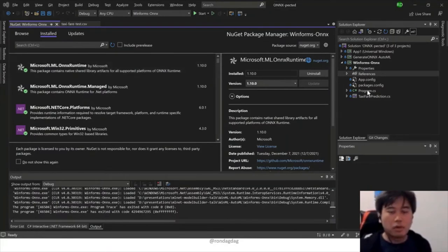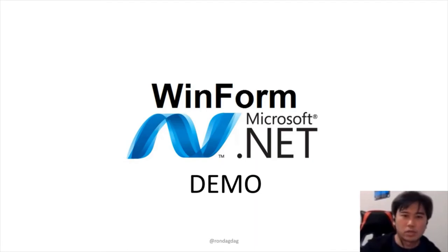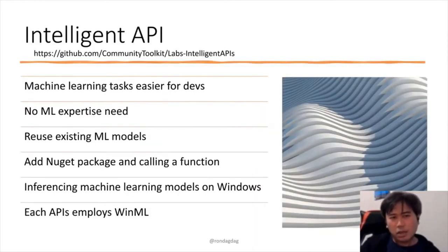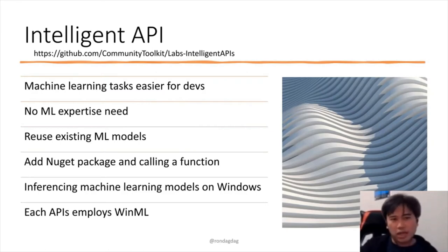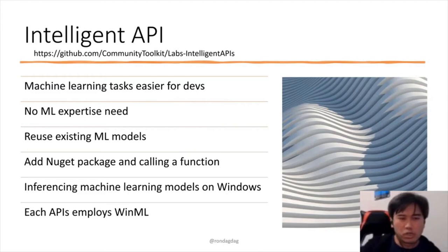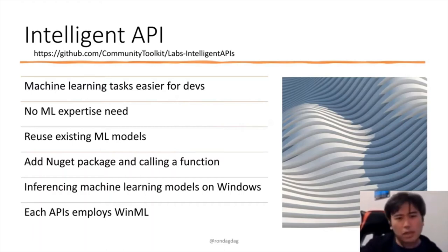That's a quick demo of how you incorporate machine learning into your Windows application as Windows AI. Now let's talk about the Intelligent API. It is on GitHub under Community Toolkit — if you just want to experiment and try out machine learning without all the machine learning expertise, it reuses existing ML models. It uses WinML on top of it.